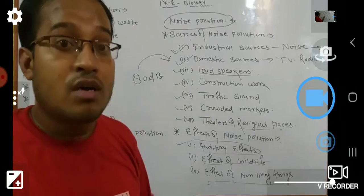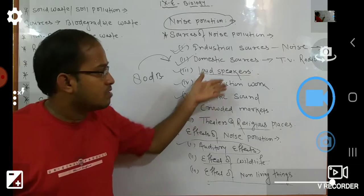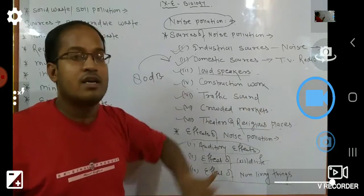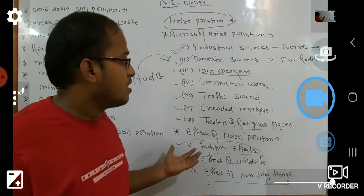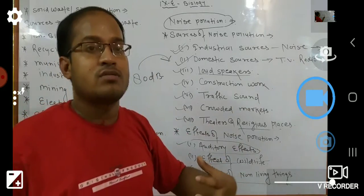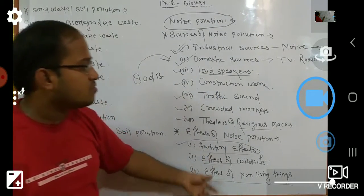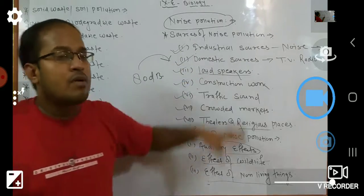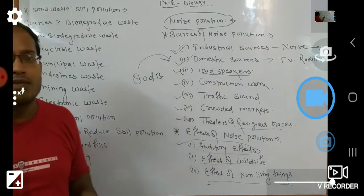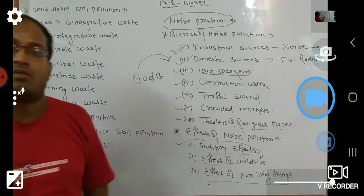Now, how can we control noise pollution? In our traffic system we have to use silencers, by which vehicles do not produce excessive noise in our environment. We should use marbles and tiles which can absorb noise. We should also use loudspeakers less frequently in marriages and festivals, and when we do use them, we should keep the volume at a very low level. By these actions we can control noise pollution.